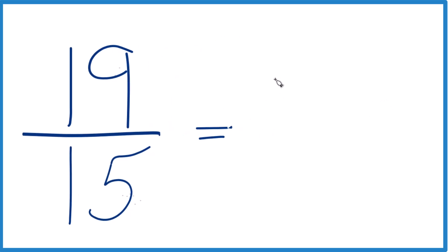15 goes into 19. Well, 1 times 15, that's 15. And then we'd have 4 left over. Bring the 15 across here. And 19/15, that equals the mixed number 1 and 4/15.